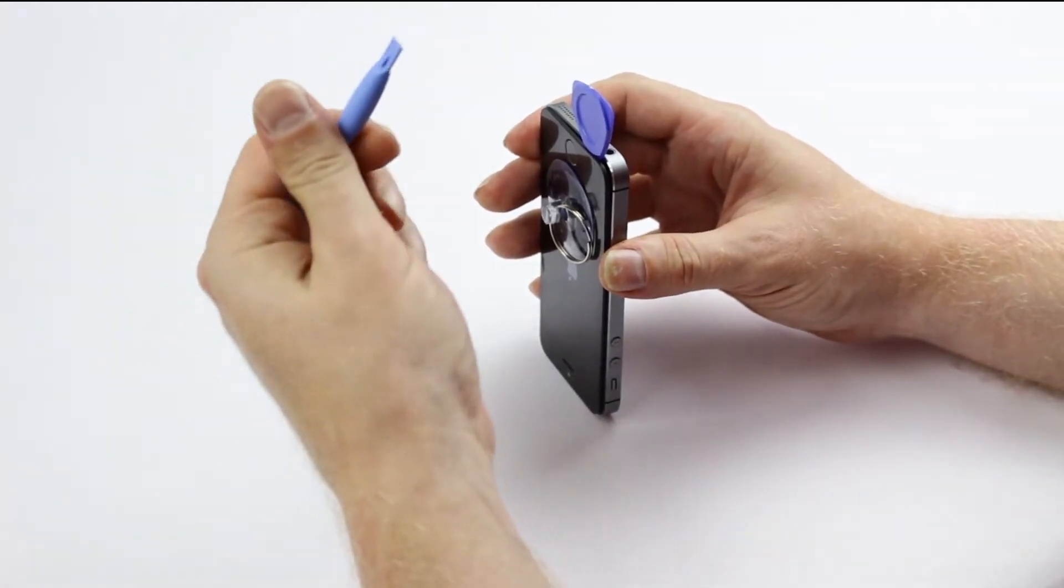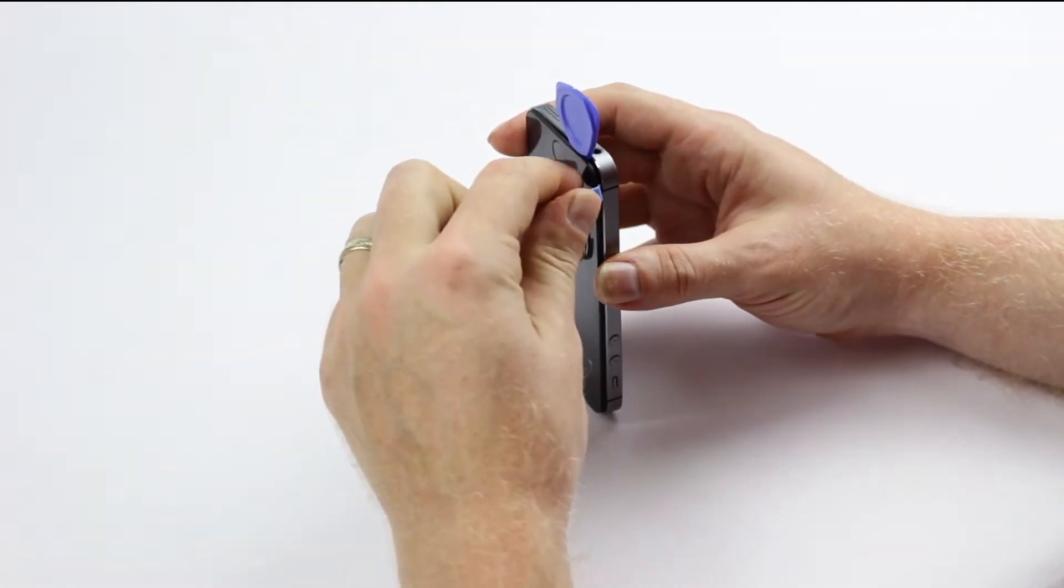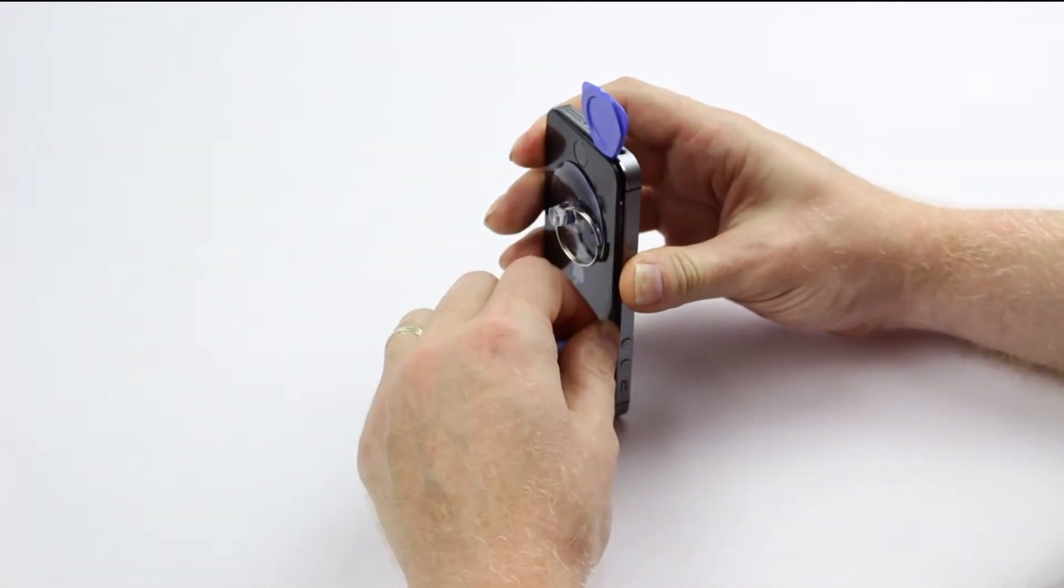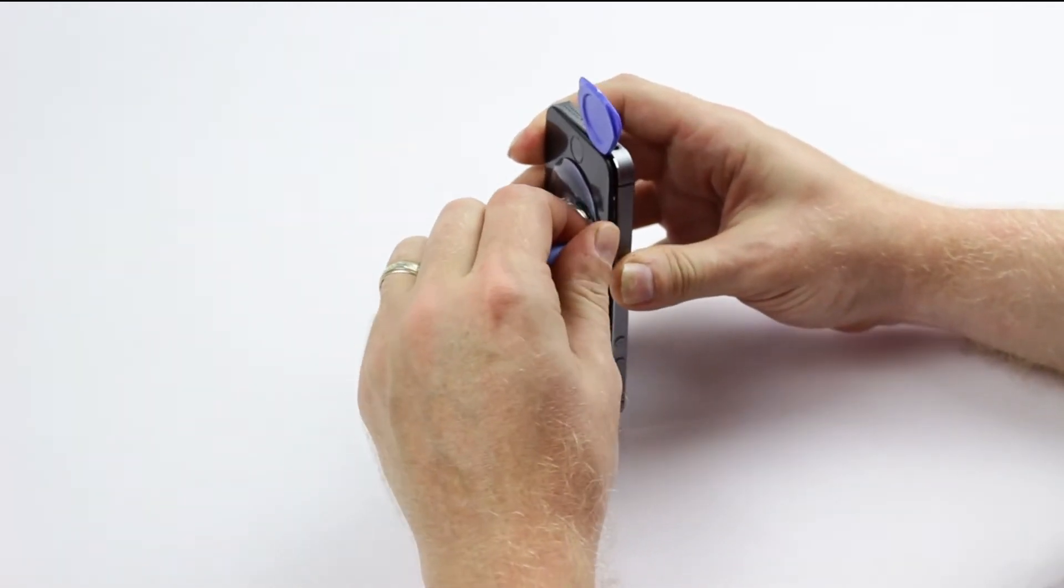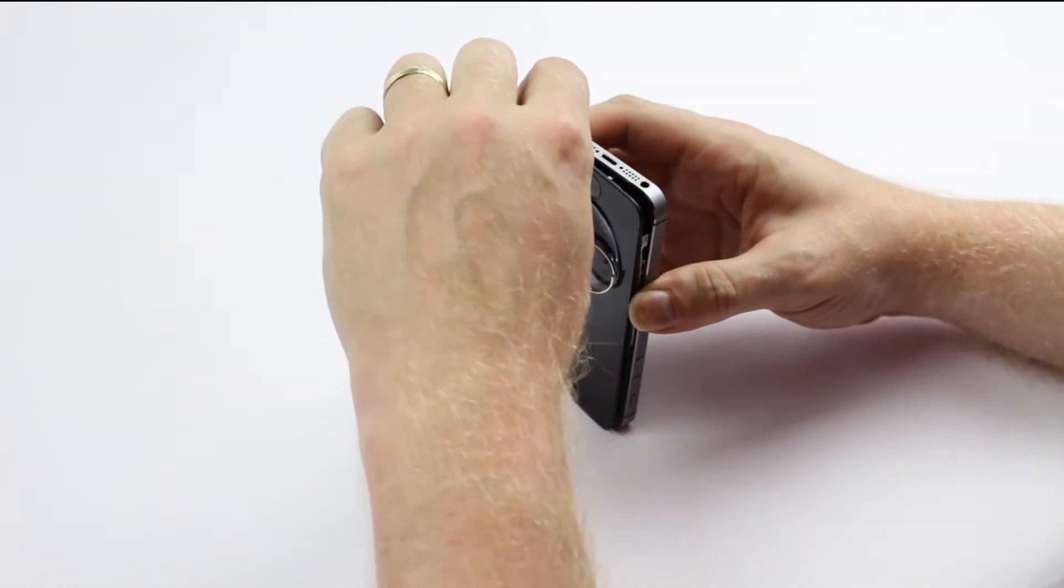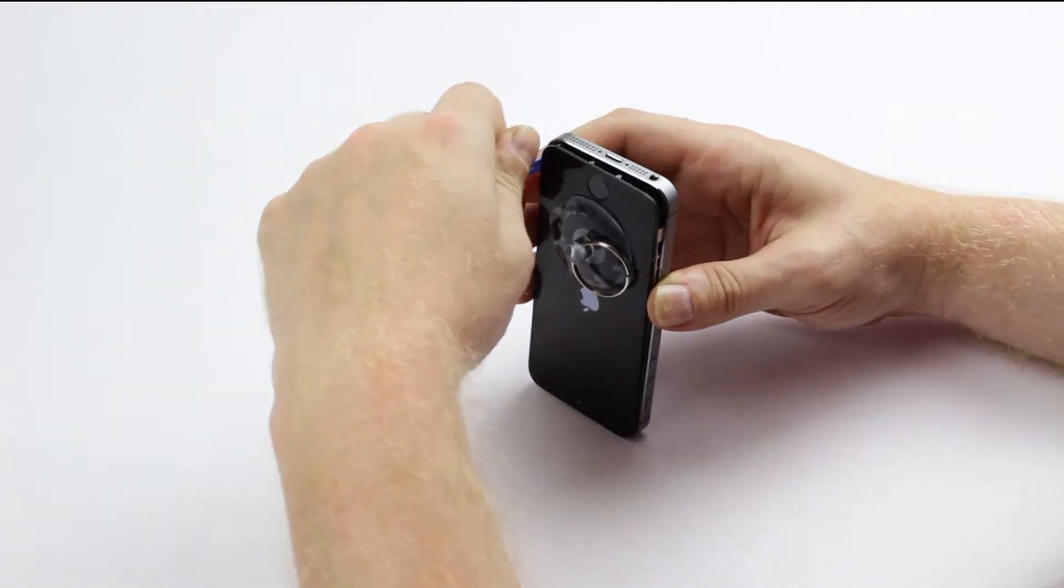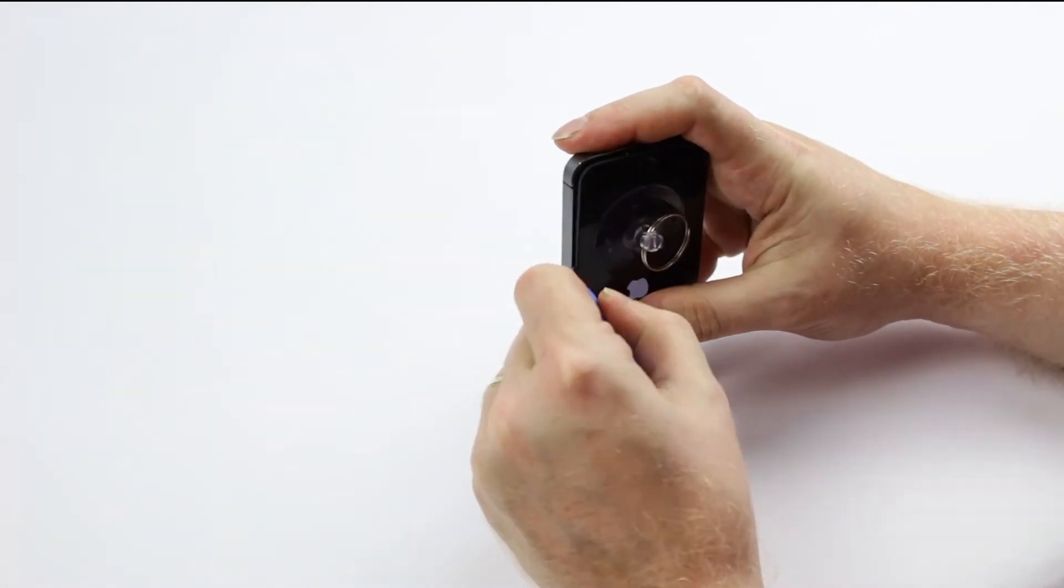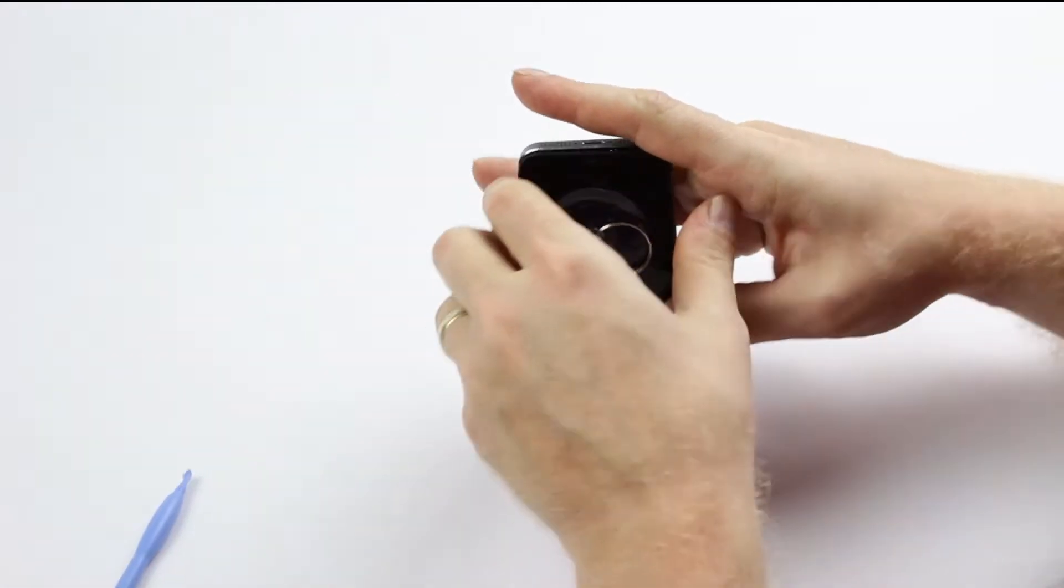And then using a separation device, I will then just slide down the side of the screen, and you see when you slide it down the side of the screen, it will just pop open. And I'll just go in the other corner, and go down the other side.